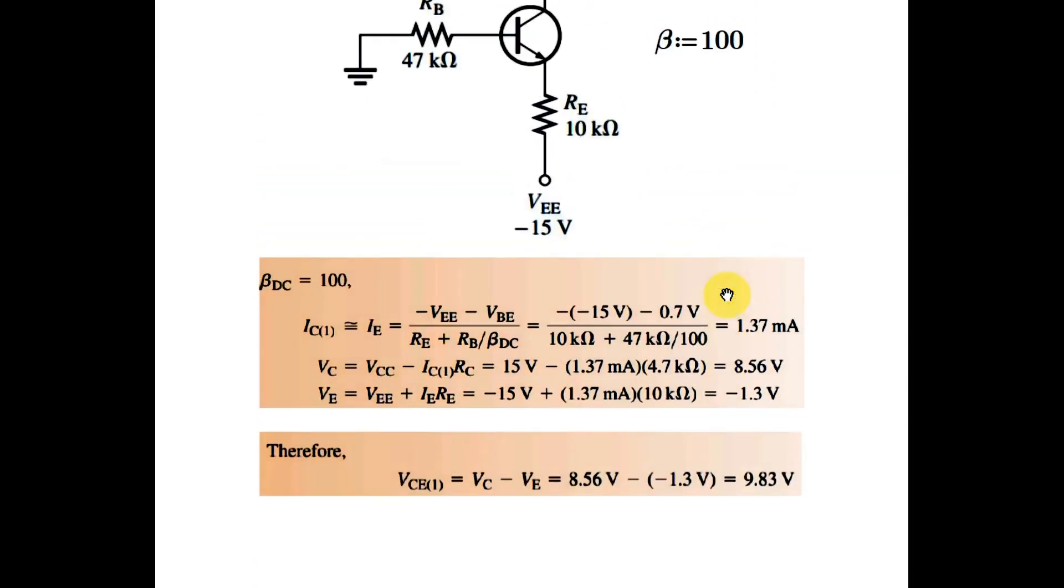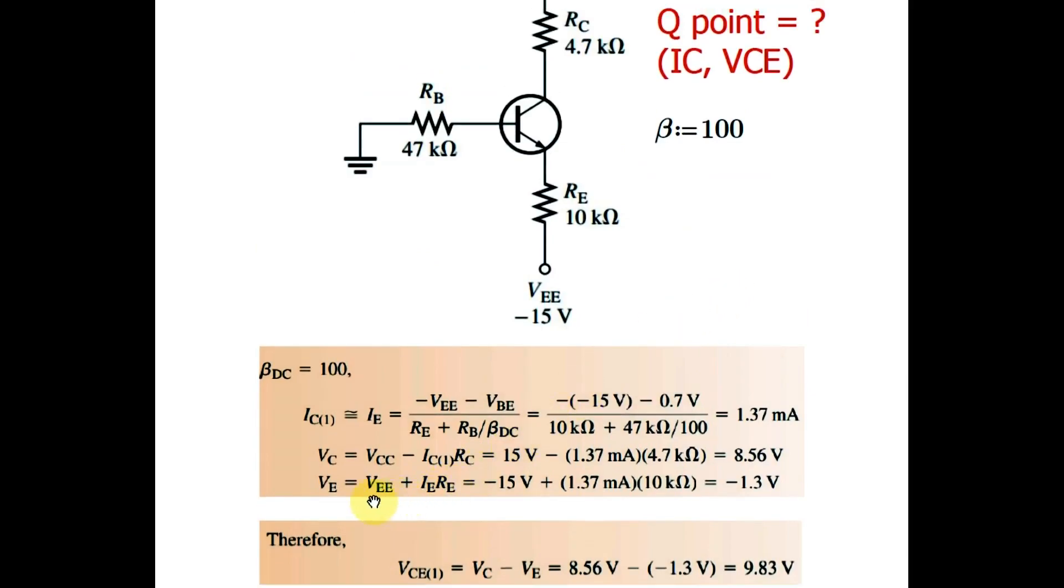Let us do some math. Let us find the value of IC which is equivalent to IE. So IE is given by minus VEE minus VBE divided by RE plus RB divided by beta DC. If you put all these values, minus 15 volt minus 0.7 volt, RE equals to 10 kilohm plus 47 kilohm divided by 100, you will get 1.37 milliampere. Now you can find the value of VC.